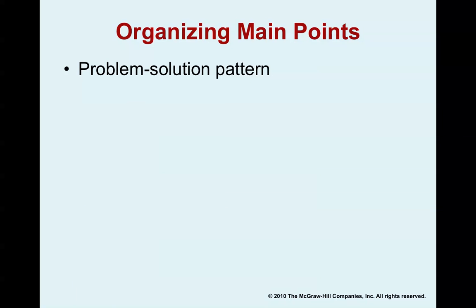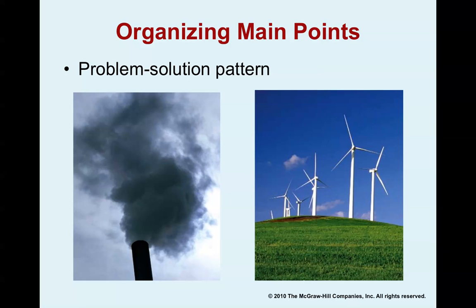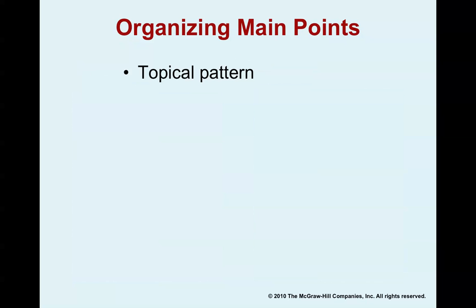Moving on to the problem and solution pattern — this is really popular in persuasive speeches in particular. You divide a speech into two sections: here's a problem and here's its solution. In a speech on air pollution, for instance, the first half could explain the problem — harmful emissions from coal-burning plants — and the second half could offer a solution, such as clean energy from wind turbines and hydroelectric power instead of burning coal. Problem and solution works very well in persuasive speeches.